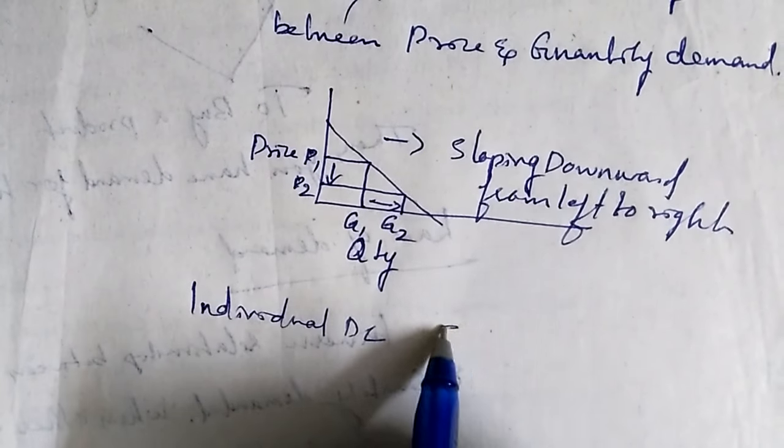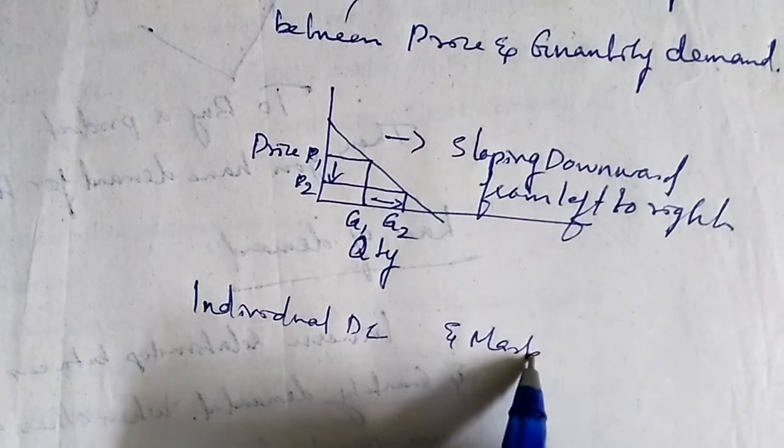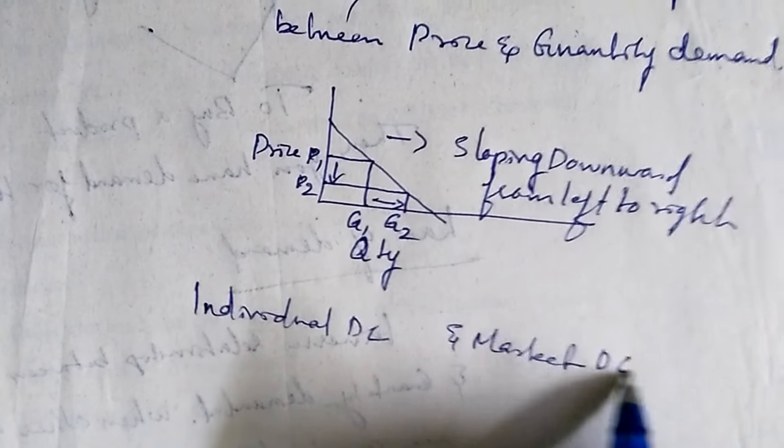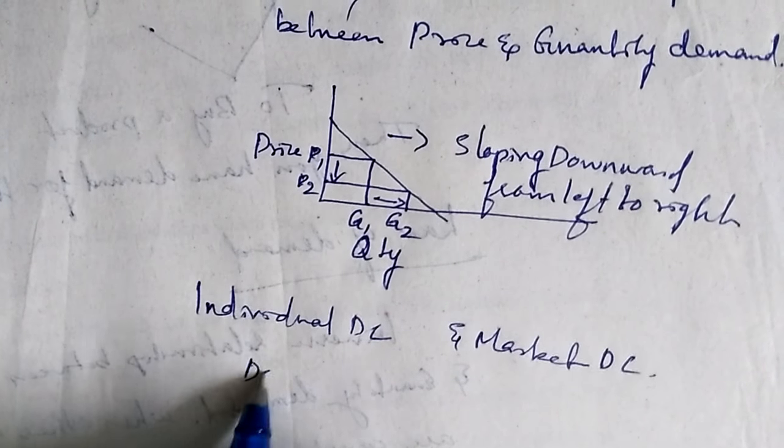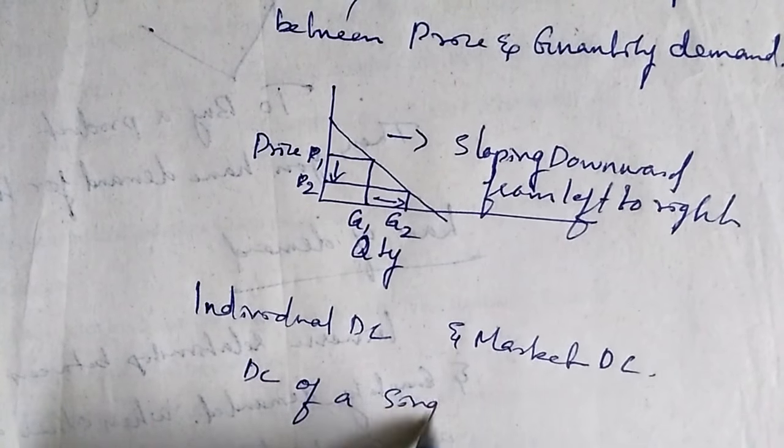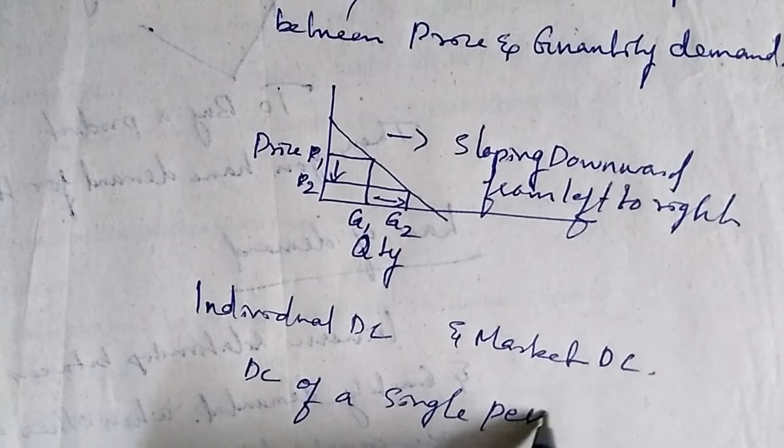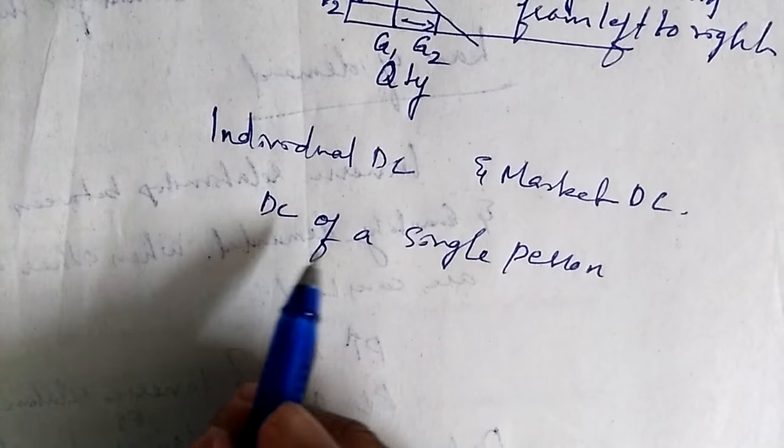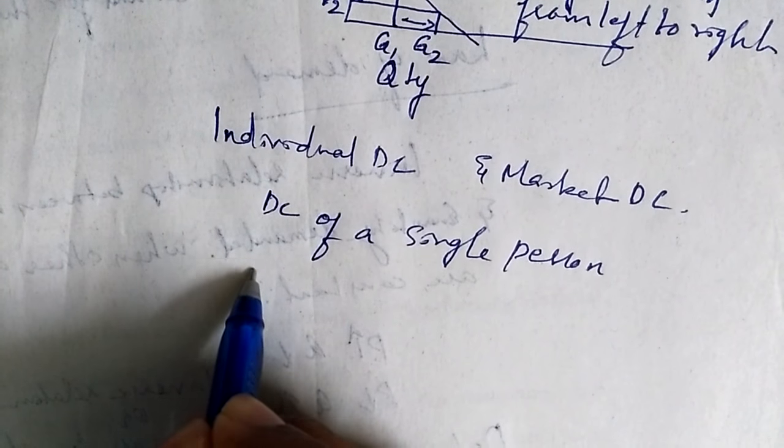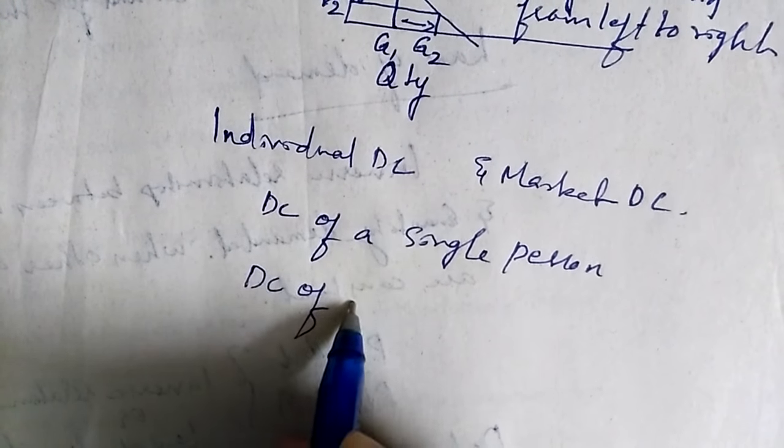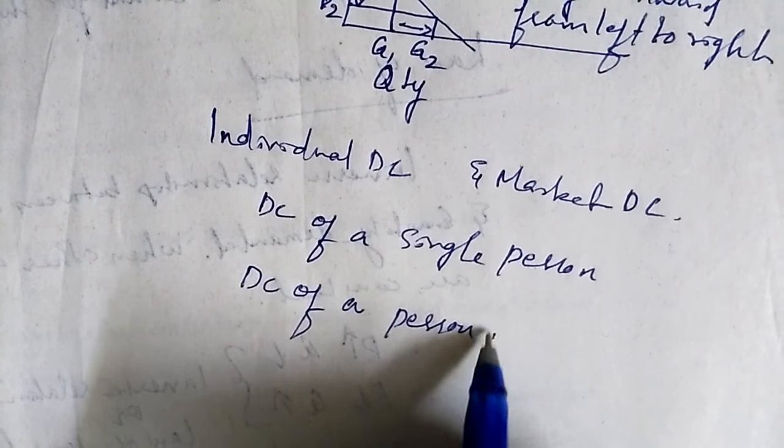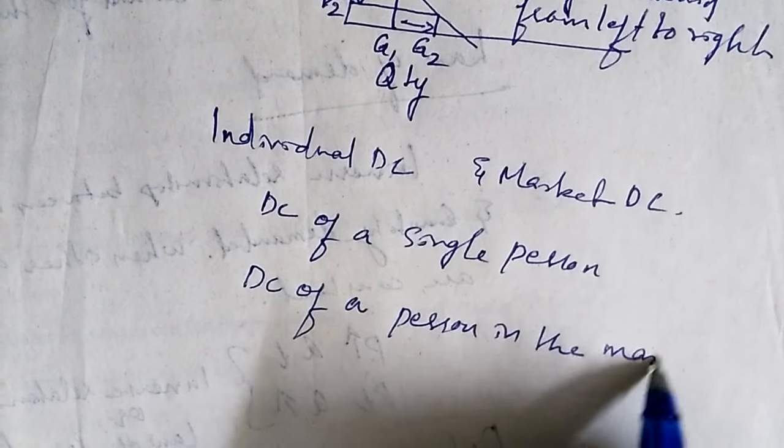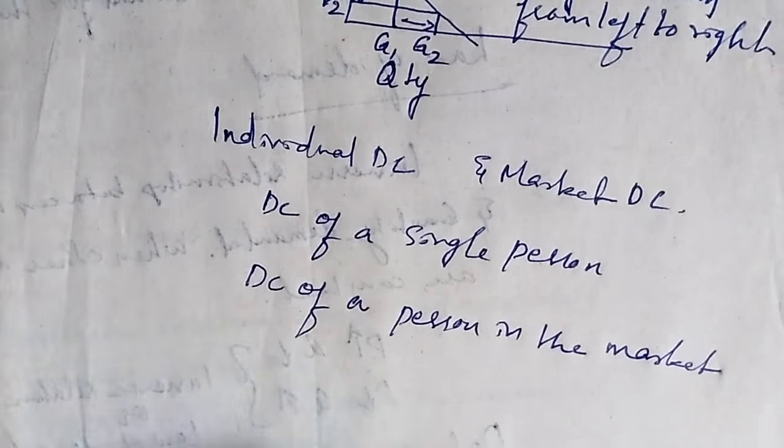and market demand curve. Individual demand curve means demand curve of a single person, and market demand means demand curve of all persons in the market.